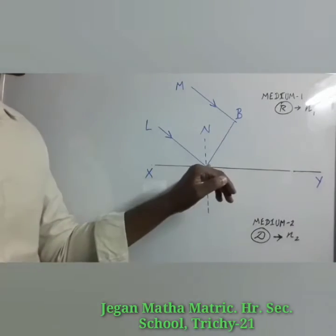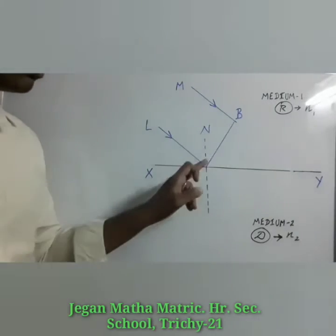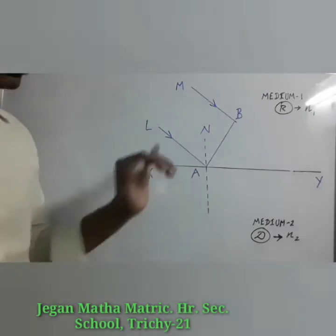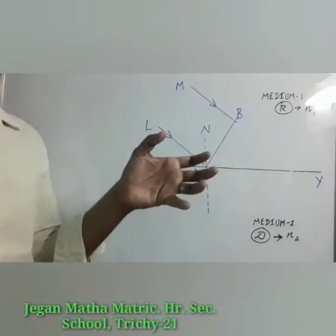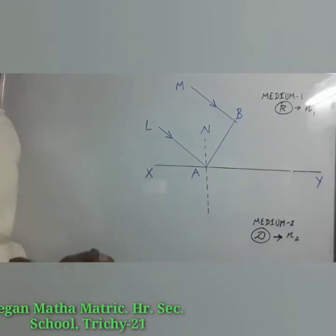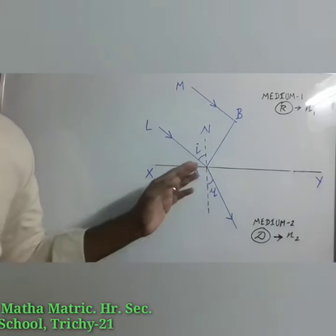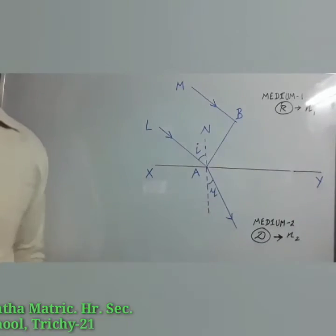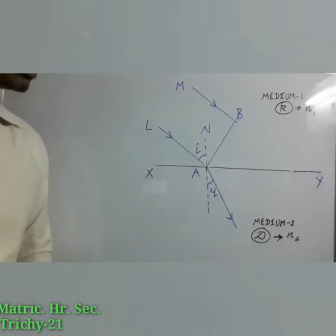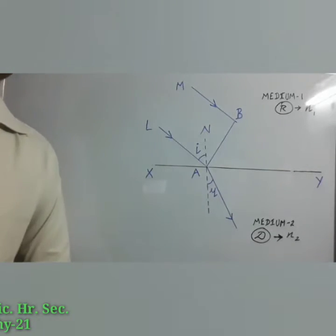We have taken the plane wavefront AB. At the given time, point A of the incident wavefront touches the refracting surface, so this ray will experience refraction. Since it is traveling from rarer medium to denser medium, it will deviate towards the normal. The angle between the normal and the incident ray is the angle of incidence i, and the angle between the normal and the refracted ray is the angle of refraction r.